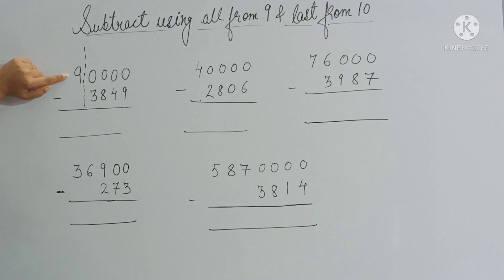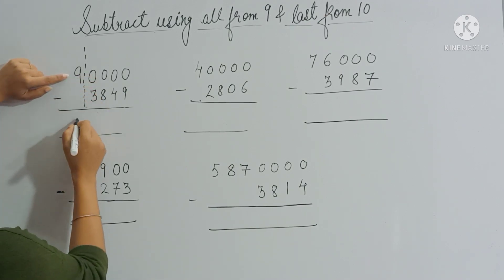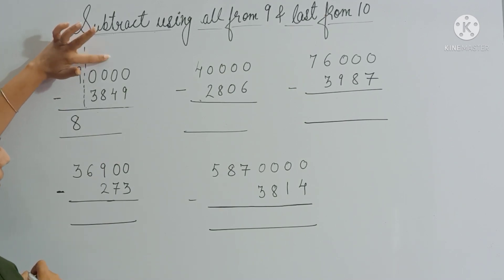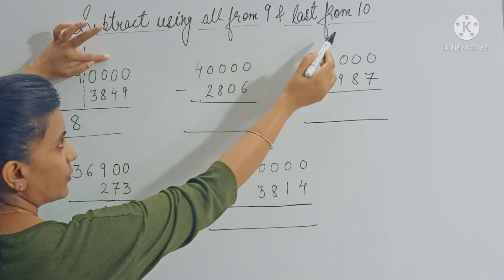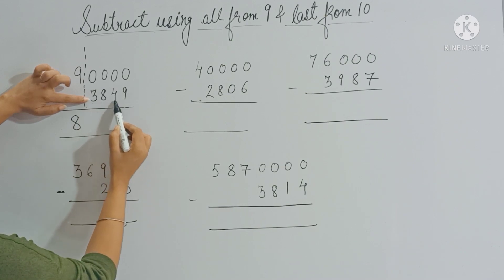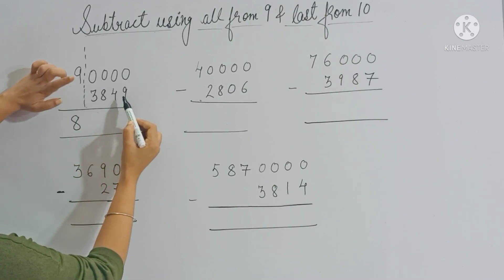From the left half you have to reduce the number by 1, so 9 becomes 8 — 9 minus 1 is 8. On the right-hand side you apply the rule 'all from 9 and last from 10.'